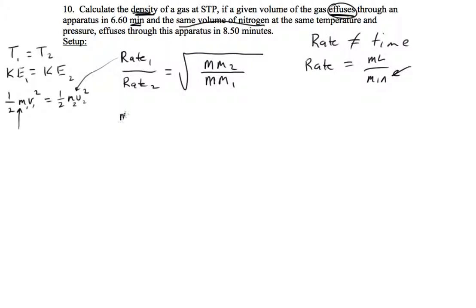We have a certain number of milliliters. It says right here, a given volume, we don't know how much, effuses through an apparatus in 6.60 minutes. So that's how we set that up, milliliters per minute. And then it says nitrogen, the same volume of nitrogen effuses through the apparatus, same apparatus, in 8.50 minutes. Now, I don't know the milliliters, but I know they're the same, so they're going to cancel out.